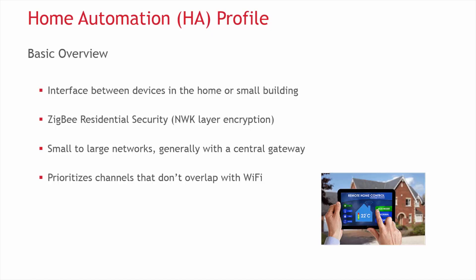In these networks, they are usually centralized with a gateway. Also, to avoid interference from Wi-Fi activity in the home, the recommended channels by the HA profile are channels that don't interact with the Wi-Fi bands. So only a subset of the channels in the 2.4 GHz band gets used.